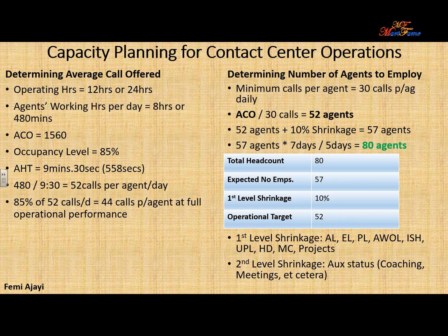Now, how do you determine the total headcount — the total number of agents you need to employ — to be able to schedule 57 agents on a daily basis for 7 days? Your agents will be working 5 days a week, so: 57 agents × 7 days a week ÷ 5 days each agent works. That gives you 80 agents that you need to employ for your contact center running 7 days a week or more than 9 hours of operations. In summary, the total headcount needed is 80.